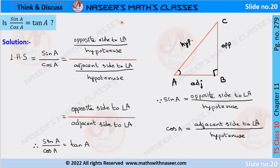To solve Think and Discuss, page number 279, Chapter 11 Trigonometry: here, sine A by cos A is equal to tan A. To prove this, we have to take a right angle triangle ABC in which angle B is 90 degrees.